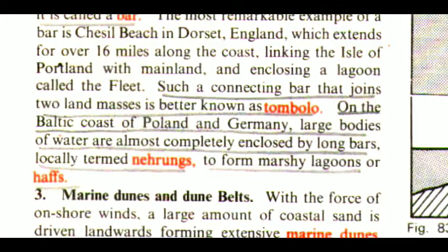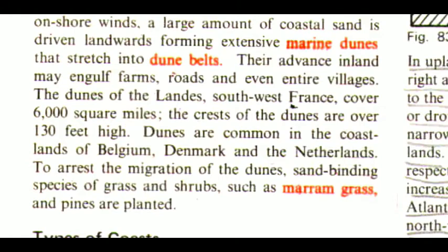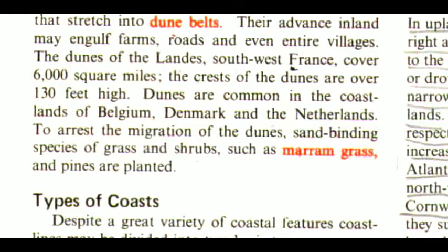On the Baltic coast of Poland and Germany, large bodies of water are almost completely enclosed by long bars, locally termed Nehrungs, to form marshy lagoons or haffs. The third one is marine dunes and dune belts. With the force of onshore winds, a large amount of coastal sand is driven landwards, forming extensive marine dunes that stretch into dune belts. Their advance inland may engulf farms, roads and even entire villages. The dunes of the Landes of southwest France cover 6,000 square miles, and the crests of the dunes are over 130 feet high. Dunes are common in the coastlands of Belgium, Denmark and the Netherlands. To arrest the migration of the dunes, binding species of grass and shrubs such as marram grass and pines are planted.